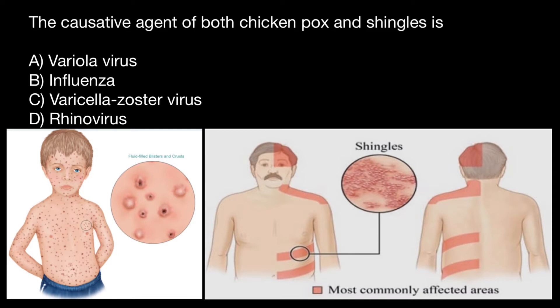If you have this type of question on your exam and you don't know which answer to choose, first look for the variants that you know are not correct answers. For example, answer D, rhinovirus — rhino means nose — so we can exclude this variant. And influenza virus, which we also know as the flu — everyone has had the flu and knows the symptoms are very different, so we can exclude that too. Now instead of four variants, we have to choose between two, so you've greatly increased your chances to choose the correct answer — not 25%, but 50%.